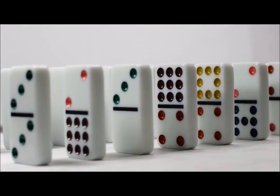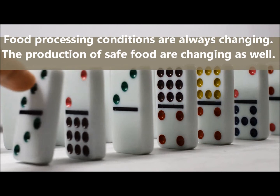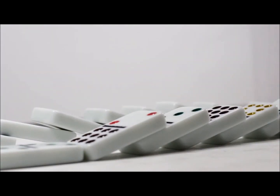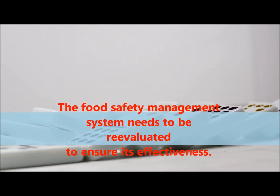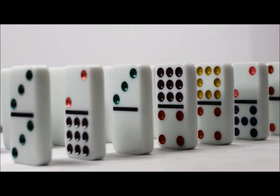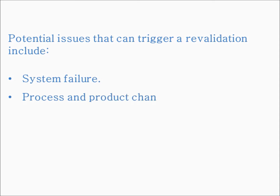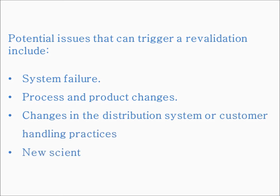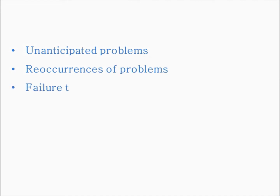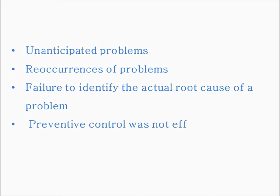Revalidation. Food processing conditions are always changing. As a result, the underlying assumptions for the production of safe food are changing as well. To meet this challenge, the food safety management system needs to be re-evaluated to ensure its effectiveness. The re-evaluation may lead to re-validation of some parts of the system. Potential issues that can trigger a re-validation include: system failure, process and product changes, changes in the distribution system or customer handling practices, new scientific or regulatory information, unanticipated problems, re-occurrences of problems, failure to identify the actual root cause of a problem, and a preventive control that was not effective.